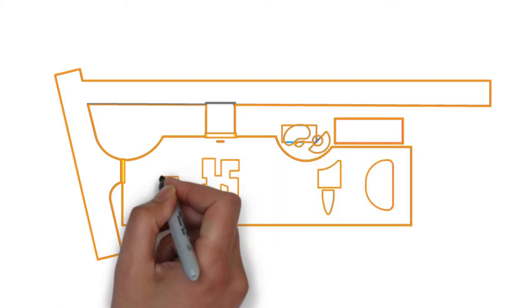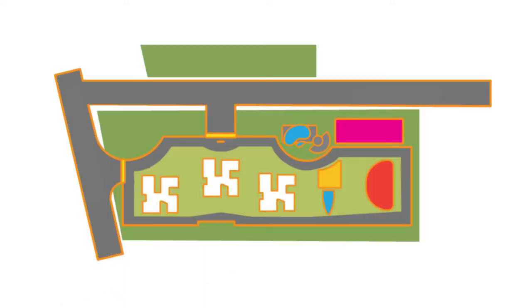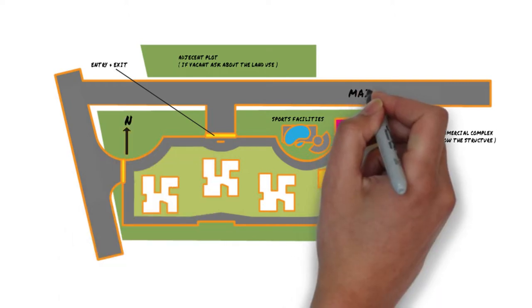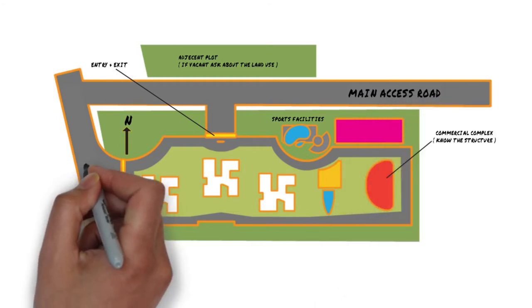The ideal master plan should have details of the plot like its dimensions, boundaries, and adjacent plots. You should be able to see the number of entry and exit points, amenities like sports facilities, commercial complexes, and green areas. It should also give you a fair idea of how vehicular traffic moves inside the complex.